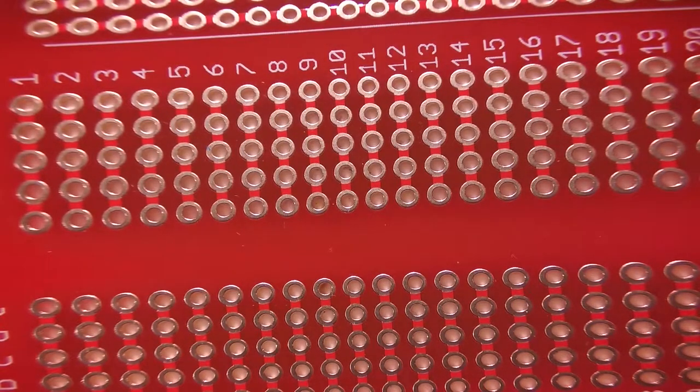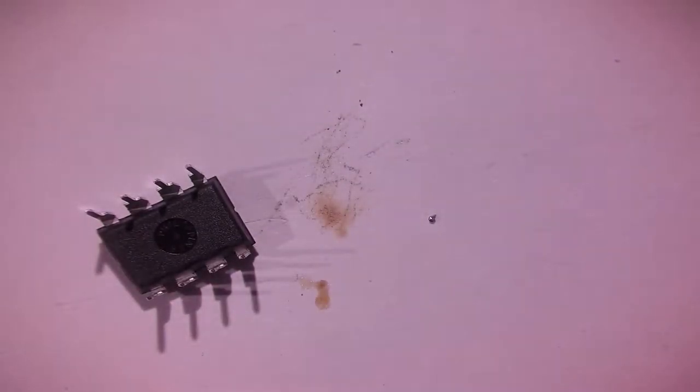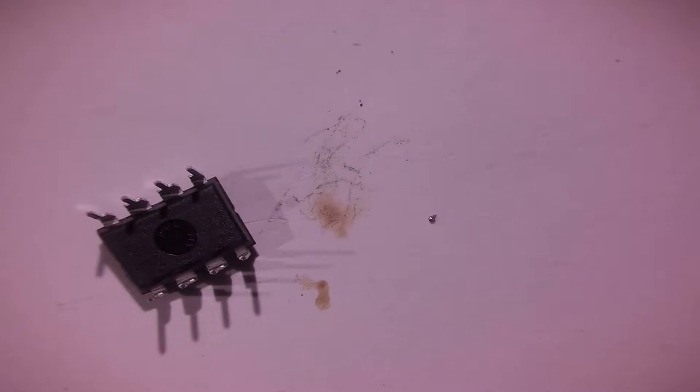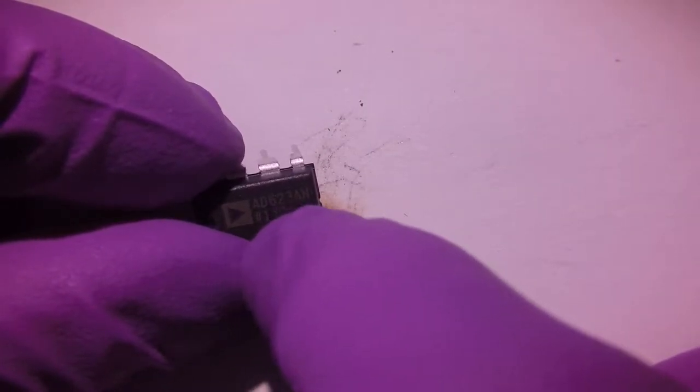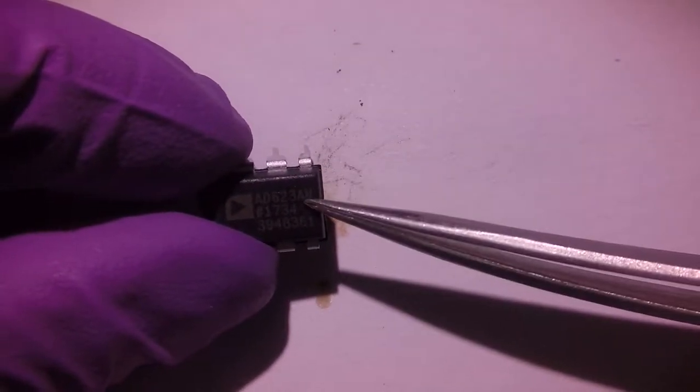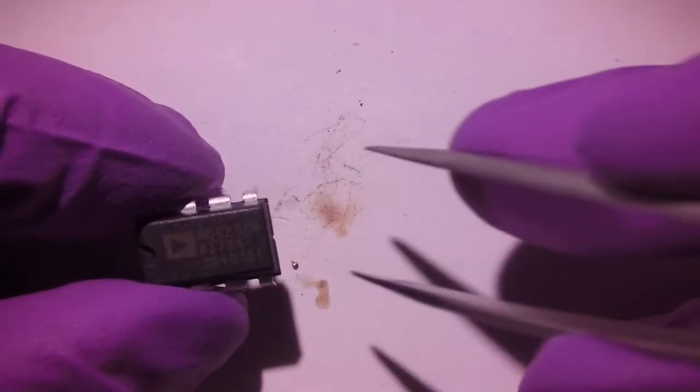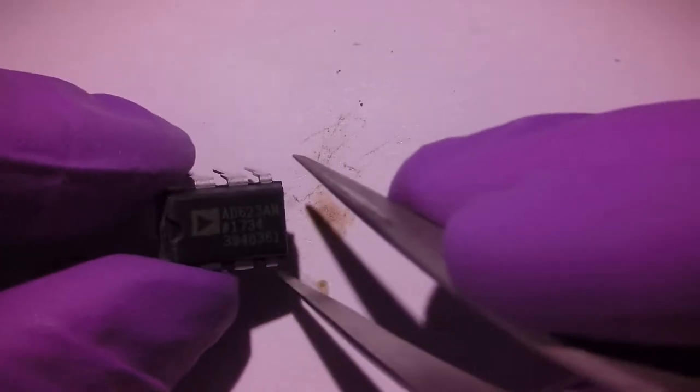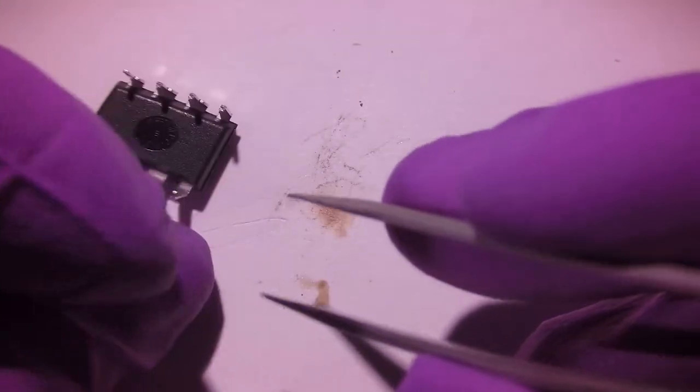If you get solder stuck to the end of your soldering iron, you can scrape it off. We have foil, you guys will have little sponges. So let me get an instrumentation amplifier. They come in packages like this - you guys will already have yours divided out for you. So this is an AD623 instrumentation amplifier. What you're looking at when you look at this is a package.